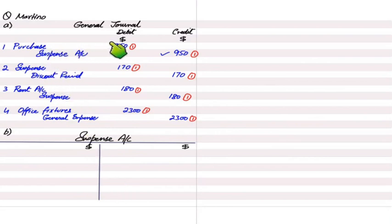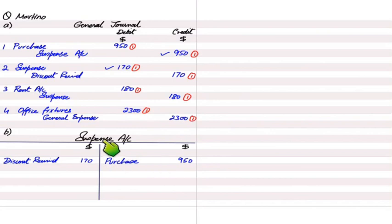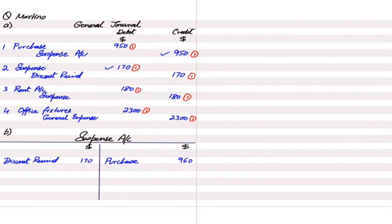The examiner asks us to show the original difference of the trial balance. We enter all the transactions into the suspense account. In the first transaction, suspense account is credited by 950 and the reference is 'purchase.' In the second error, we debit suspense account by 170 and the reference is 'discount received' — on the debit side we use the reference for the credit entry, and vice versa. In the third transaction, suspense account is credited and the reference is 'rent.' There is no suspense entry in the fourth transaction.